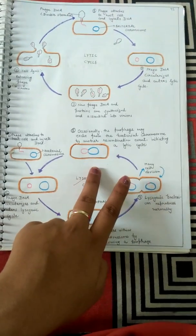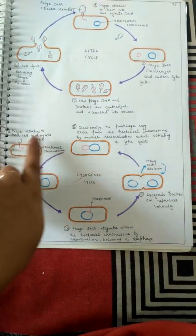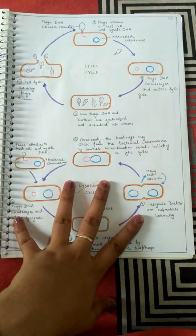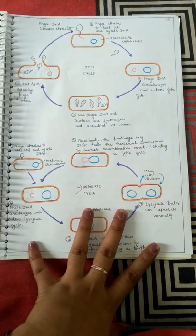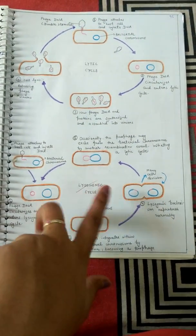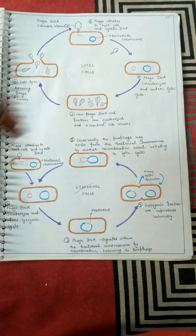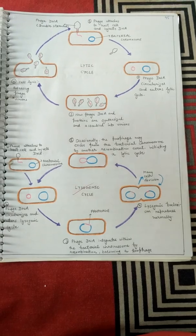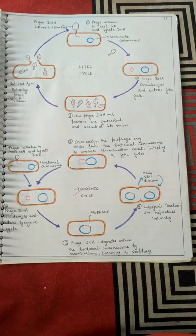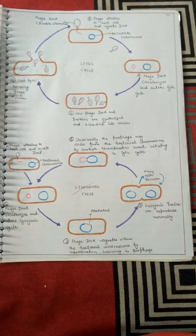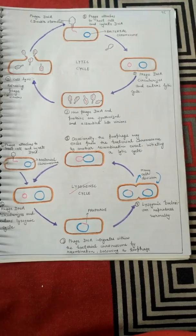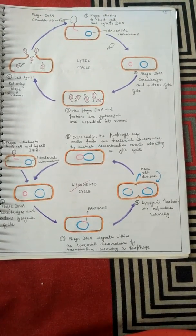After induction, the lysogenic phase gets converted into the lytic phase and the lytic cycle starts. This was the complete overview of the lytic cycle and lysogenic cycle of bacteriophage. By these methods, bacteriophage multiplies and forms many new infectious particles which again infect other bacteria and continue their life cycle. I hope this video will be helpful for you. Thank you friends.